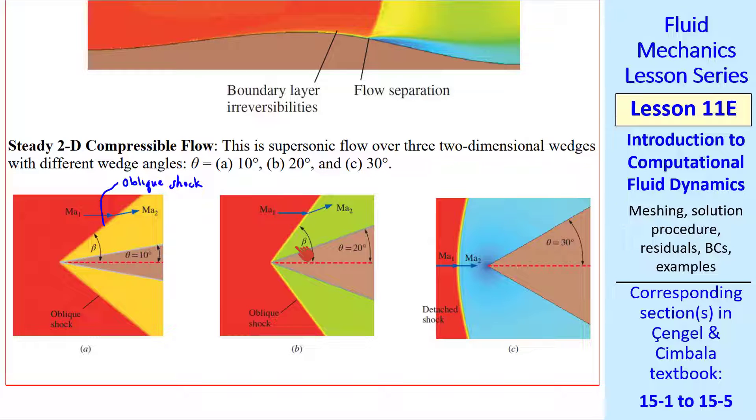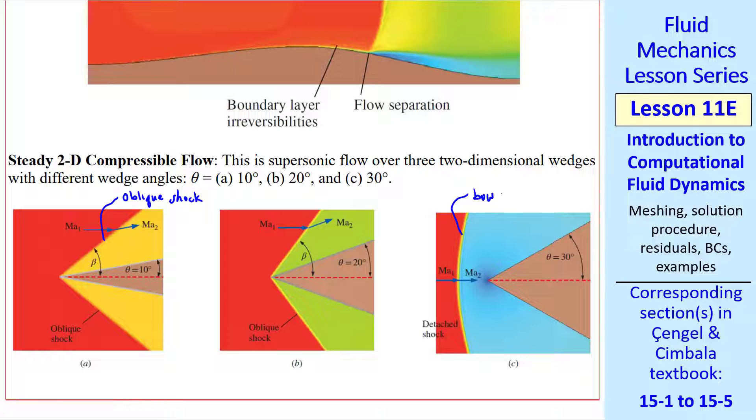Beyond a certain angle, such as here at 30 degrees, the shock is no longer attached to the nose, but rather moves forward and forms what we call a bow shock.